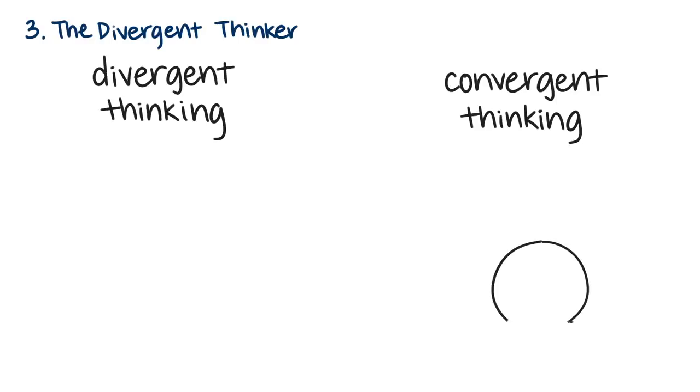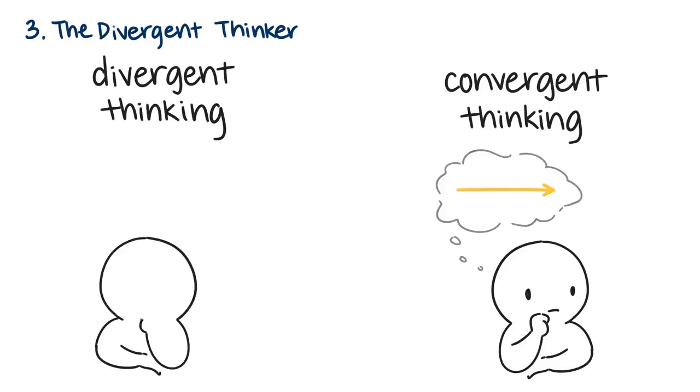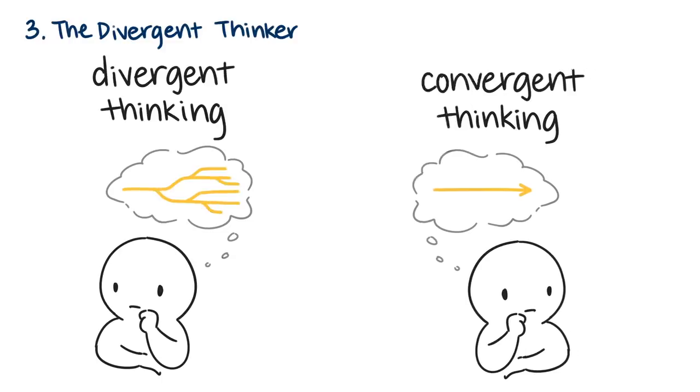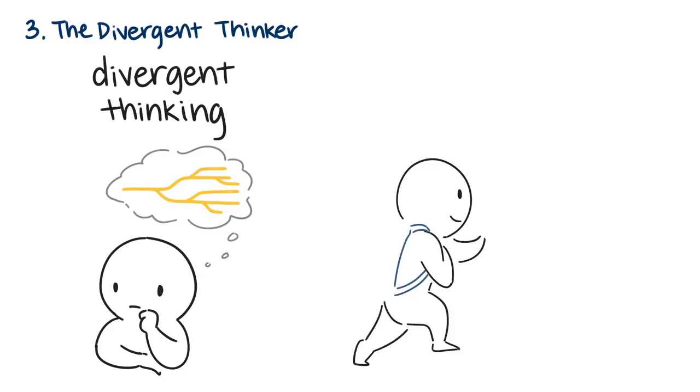Whereas convergent thinking entails concentrating on only one idea or a single solution, divergent thinking involves a more flexible approach where many solutions and options are explored. People who identify as divergent thinkers tend to brainstorm often and enjoy taking risks in order to explore other alternatives.